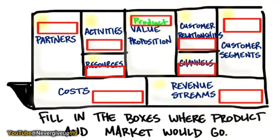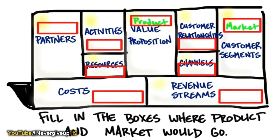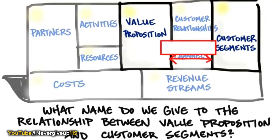The value proposition includes all the features of your product, but also what pains and gains you're solving for the customer segment — that's where the market goes. Market includes who your customers are and what problems you're solving for them. The name we give the relationship between the value proposition and the customer segment is product market fit: finding the right balance between the minimum viable product and the customer archetypes.